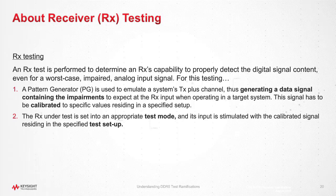In the second step, the device under test is set into an appropriate test mode, either in-band with the pattern generator or by a custom interface. It can be a side-band interface that is provided by the implementation. Then, stimulate the receiver with the stressed signal that was calibrated before using the specified test setup. This may include necessary auxiliary signals such as reference clock.